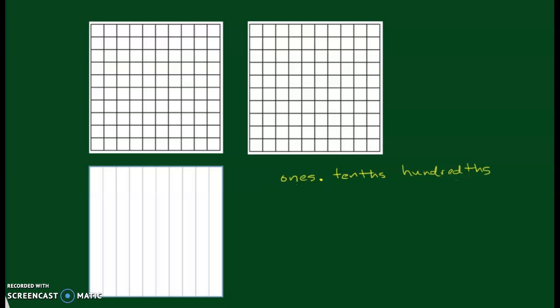As you can see on the screen here, I've got three different grids. This one has ten sections, and I'm not going to count all of them, but this one has a hundred squares on it. If you want a bigger review of this, you can go back to lessons 4.1 and 4.2 — we also do some work with these grids in those videos.